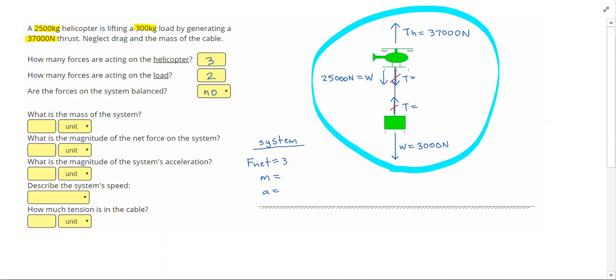So I'm going to do 37,000 minus 28,000, and get 9,000 Newtons upwards as my net force. That was my second answer over here.